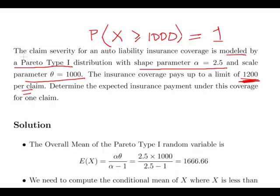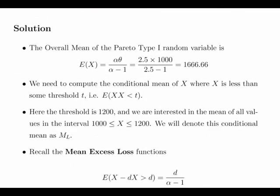The overall mean for the Pareto Type I random variable in this instance is E(X) = αθ/(α-1). In this case it is 2.5 × 1000 divided by 2.5 - 1 = 1666.66.